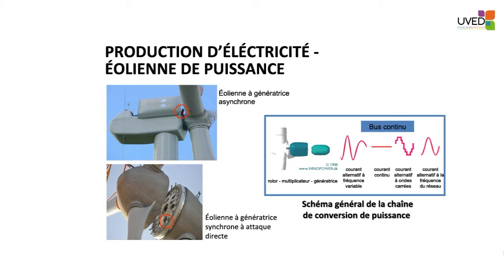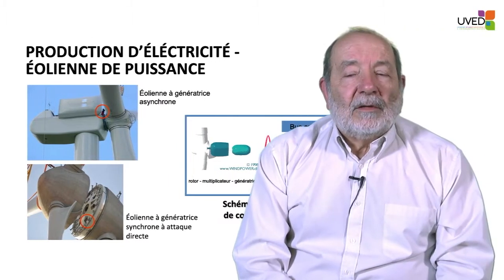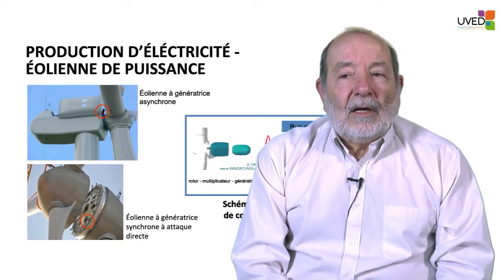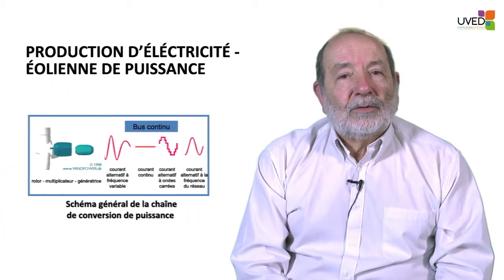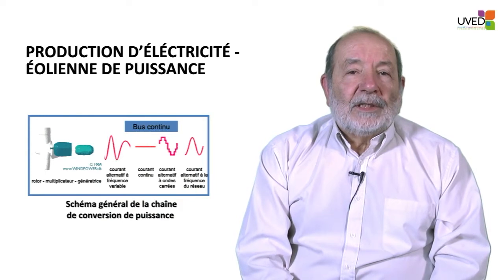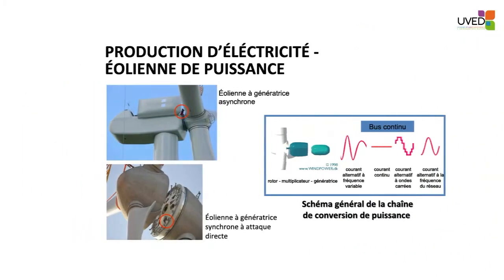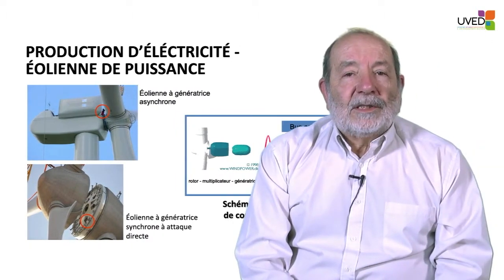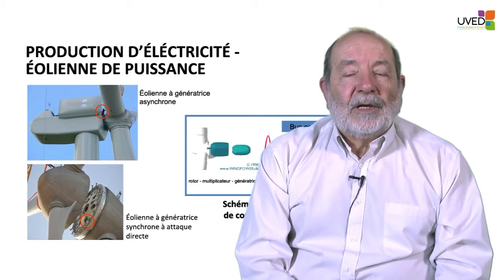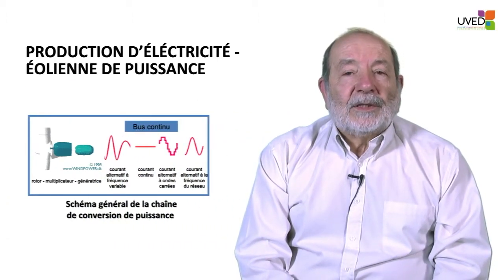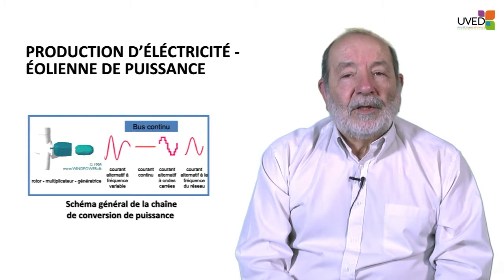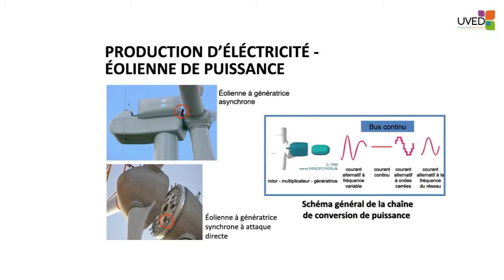Regardless of the type of generator, the current produced is an alternating three-phase variable-frequency current. When the windmill starts, the frequency changes depending on the rotor's rotating speed. It is impossible to connect directly to the grid where frequency is fixed. It is therefore necessary to go through a DC bus, so the current is rectified using rectifiers to supply a continuous voltage, from which an alternating current with fixed frequency is produced using inverters.